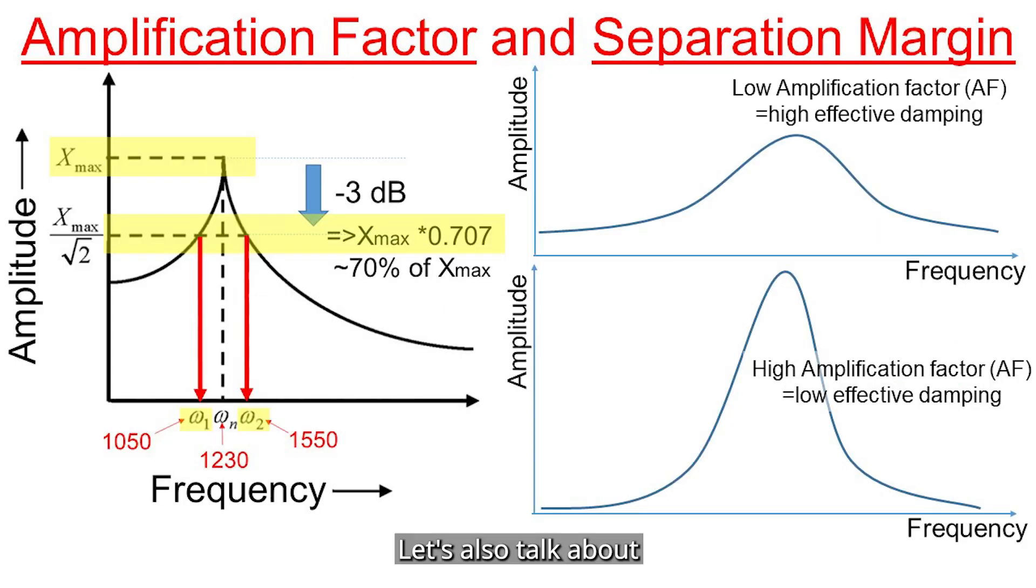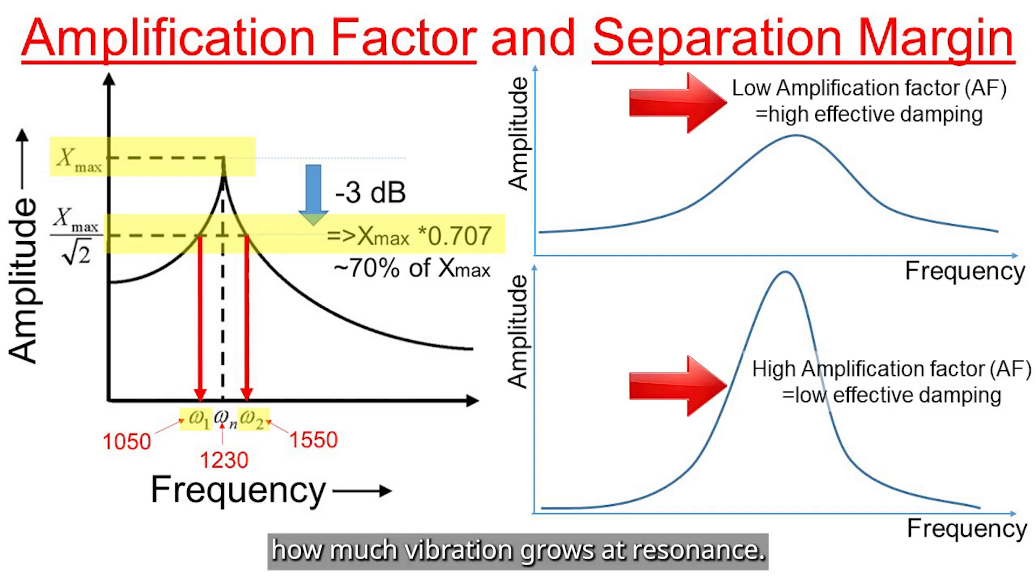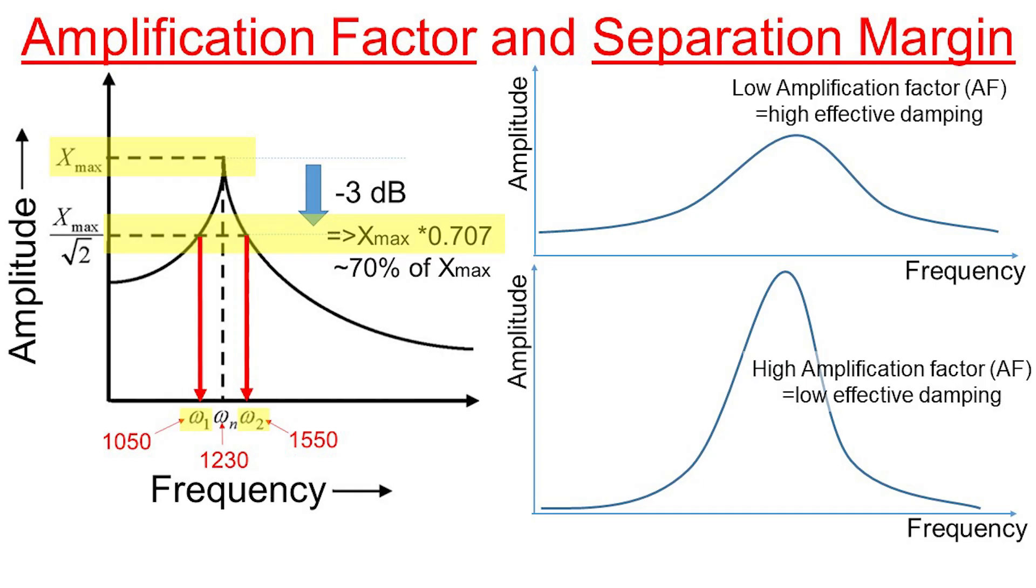Let's also talk about amplification factor, or AF, and how it's used to define separation margin. The amplification factor tells us how much vibration grows at resonance. A higher amplification factor means the system is more sensitive to excitation. We can use the half power bandwidth method to estimate the amplification factor.